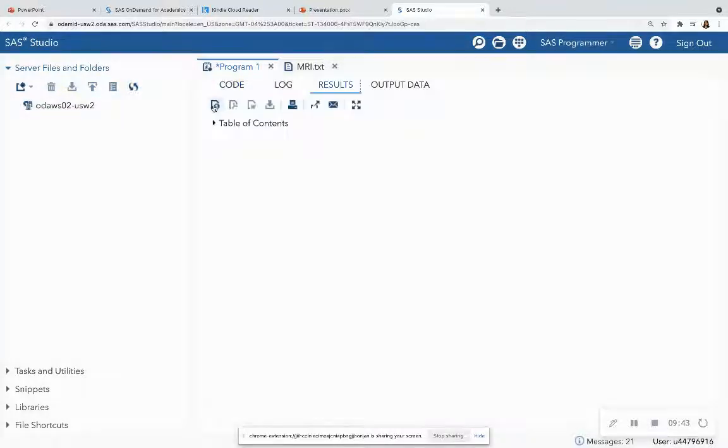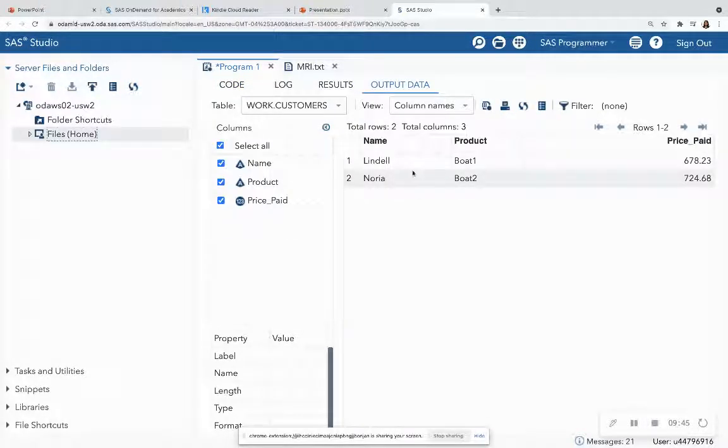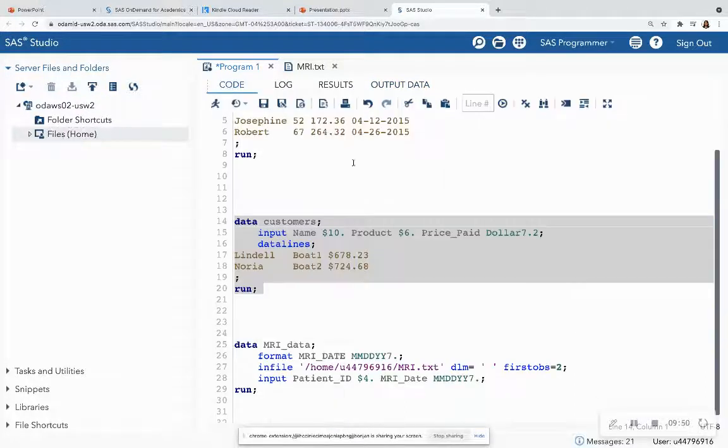And then I run this, and I have the name, the product, and the price paid. Notice that the dollar signs were dropped.